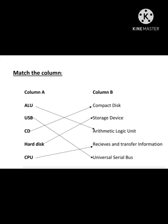Third one is CD. What is CD? Look at the first option in column B — that is Compact Disk. We will match CD with Compact Disk because CD stands for Compact Disk. Compact Disk is the full form of CD.